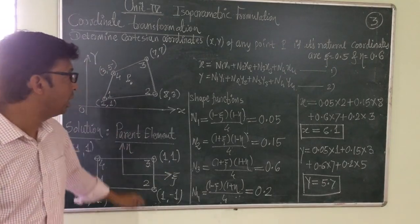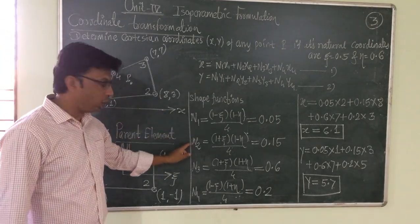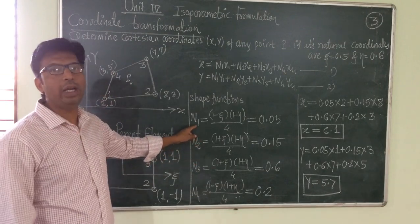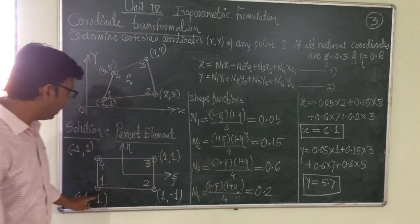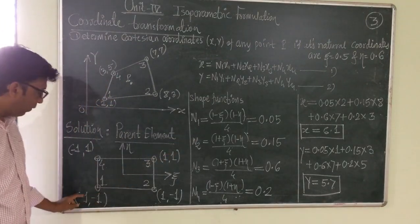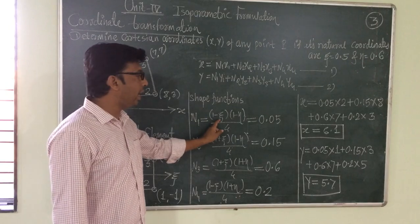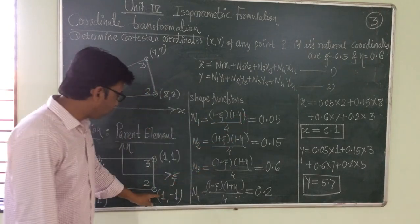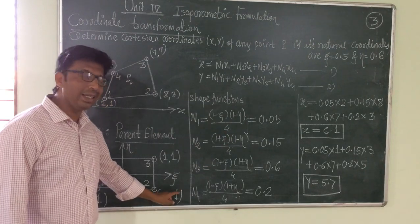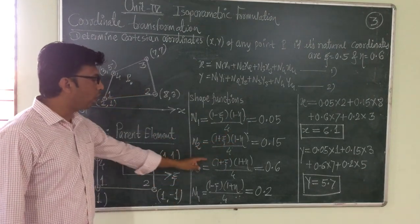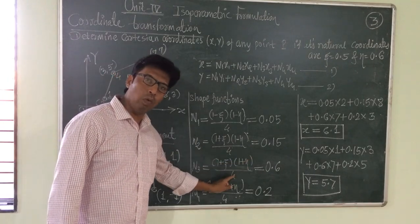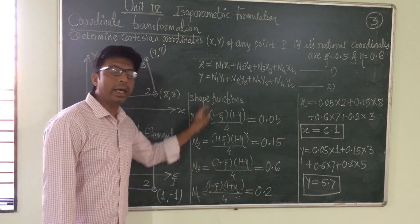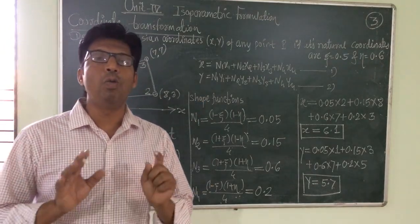For this four-node rectangular element, write down the shape functions N1, N2, N3, N4. There is a simple logic: shape functions follow the signs of coordinates. N1 equals (1 − xi)(1 − eta) / 4; N2 equals (1 + xi)(1 − eta) / 4; N3 equals (1 + xi)(1 + eta) / 4; and N4 equals (1 − xi)(1 + eta) / 4. These are the shape functions for the parent four-node rectangular element.